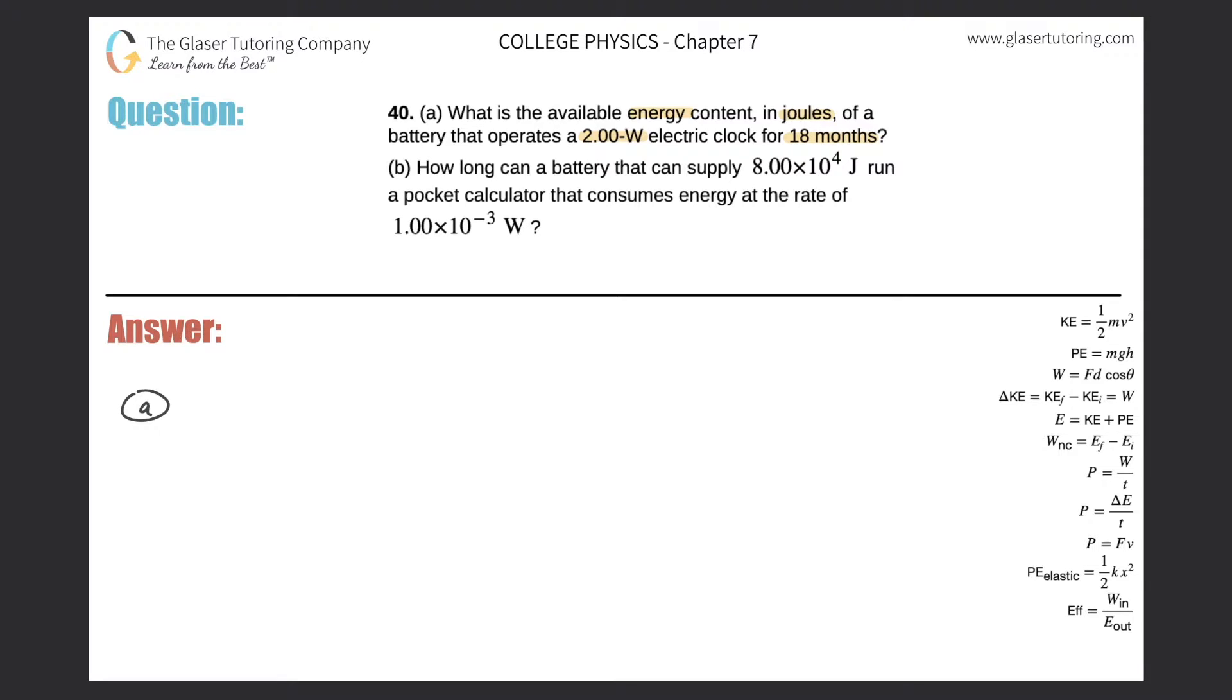We need to calculate energy, and we are given power in watts and time in months. So we need to think of a mathematical relationship. On the right-hand side, there are two formulas we can basically choose from. It won't really matter, but I'm going to choose this one over here.